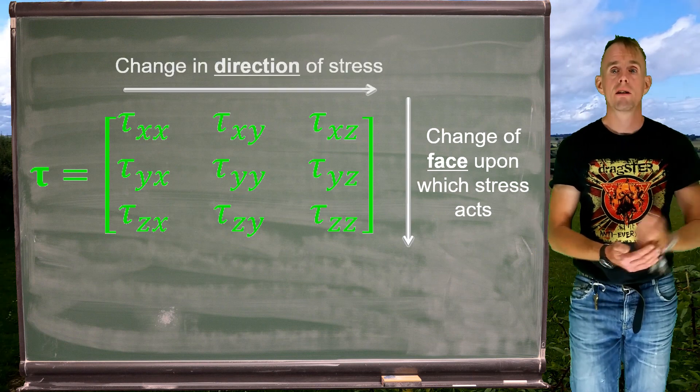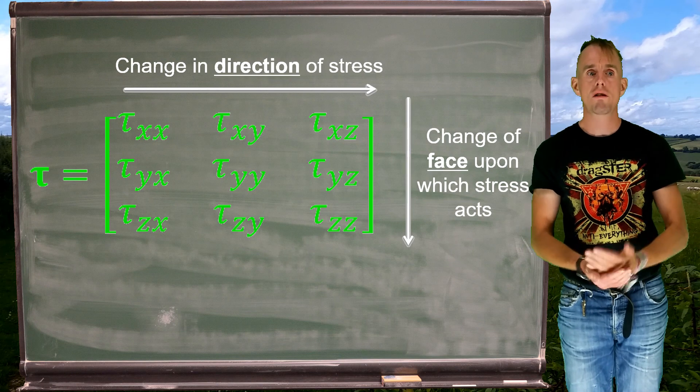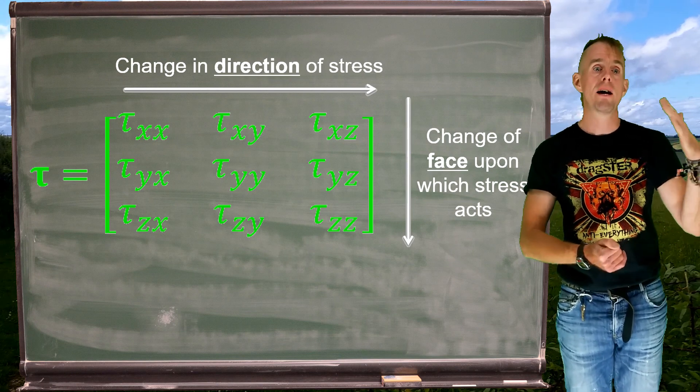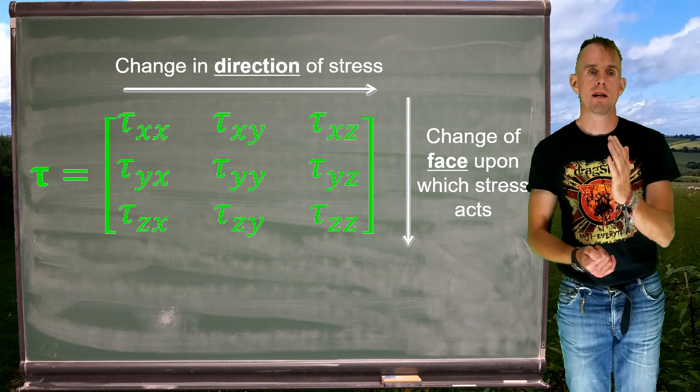The second subscript is the direction of the stress. So as we go across the columns, we have the x direction, the y direction, and the z direction.